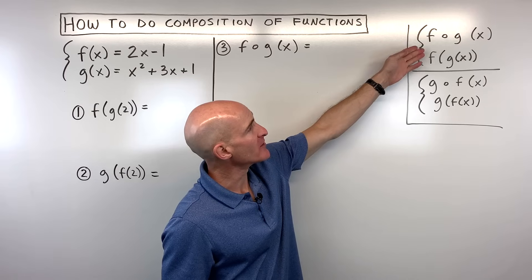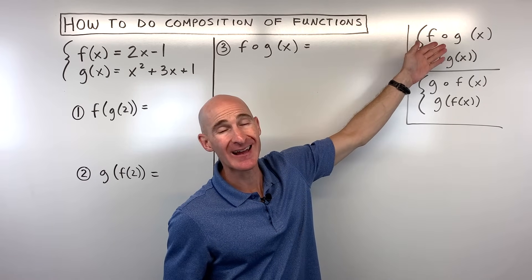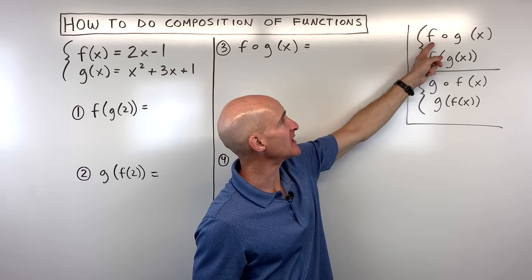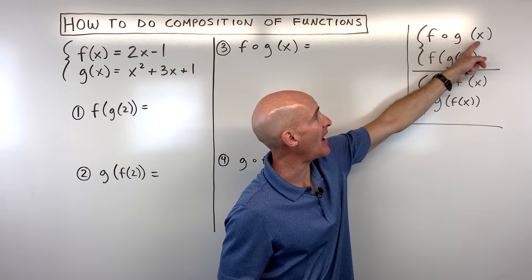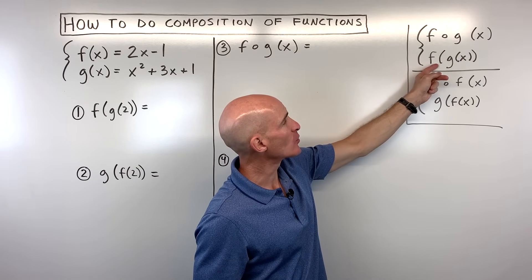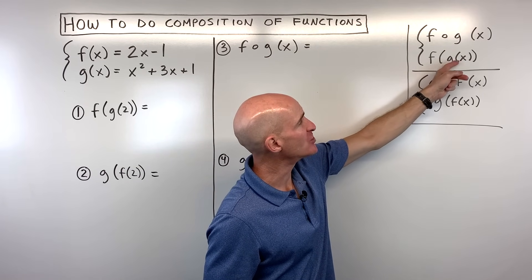The first thing you want to be aware of is this different way of writing the composition of functions. Sometimes you'll see it as f of g of x with this little circle here and this is equivalent to this notation f of g of x.